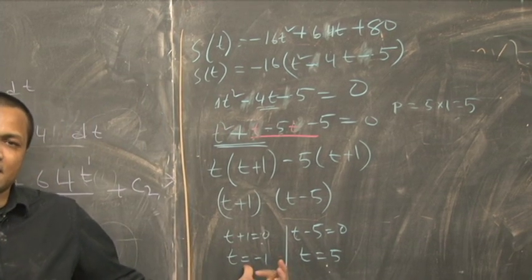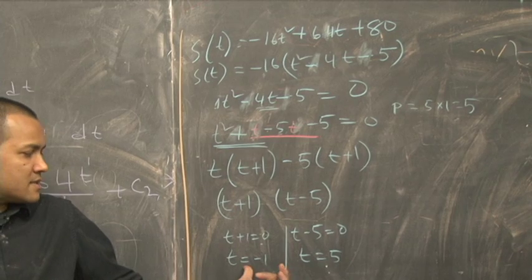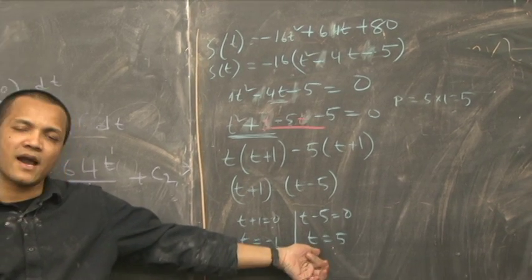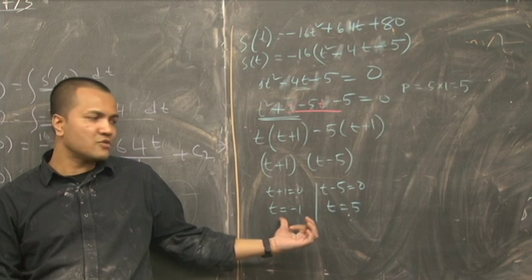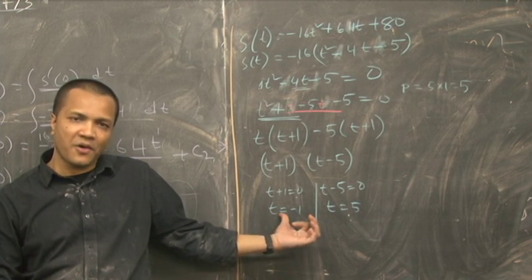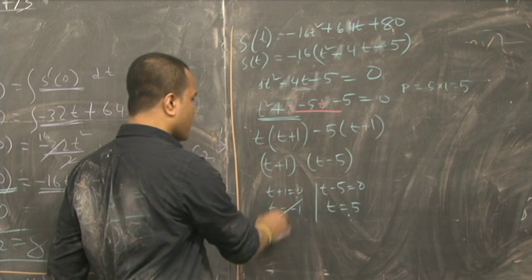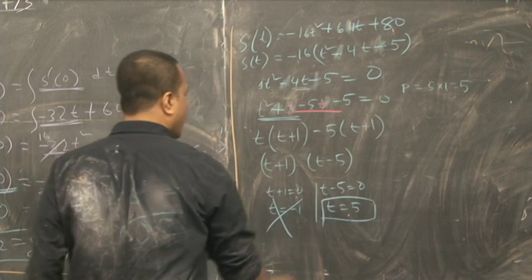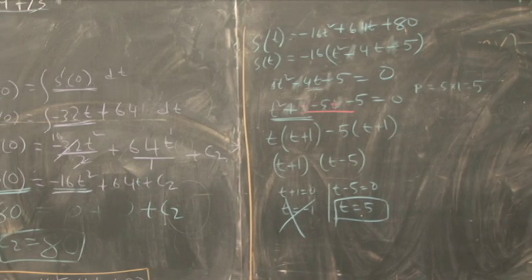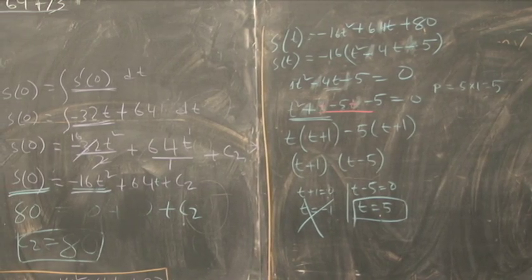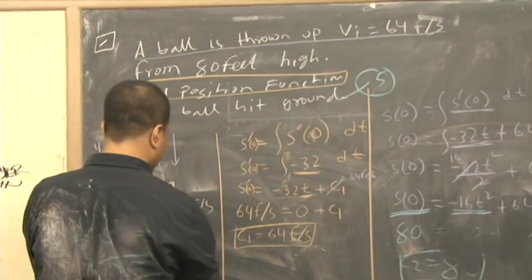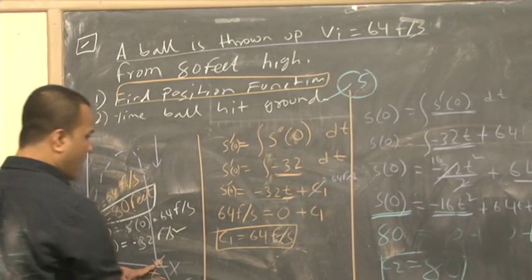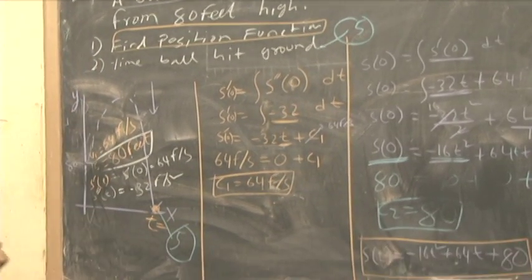Now, t is negative 1, the time is negative, and t is 5, time is 5 seconds. Think about it, does negative time make sense? No, it doesn't. So we're going to cross that out. We're only going to take t equals 5 seconds. When the ball hits the ground, it was just 5 seconds.